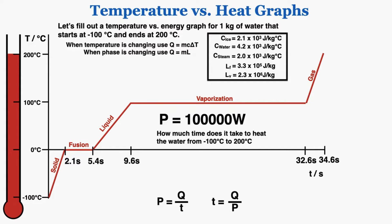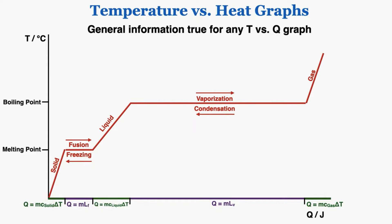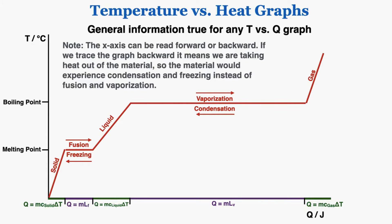Now for general information true for any temperature versus heat graph: phase changes always appear at the melting point and boiling point temperatures. The energy changes are written on the x-axis, so each interval equals that exact value. The x-axis can be read forward or backward — tracing backward means heat is being removed, so the material experiences condensation and freezing instead of fusion and vaporization. The energy involved in a phase change is the same in both directions; condensation reduces energy by the same amount that vaporization increases it.